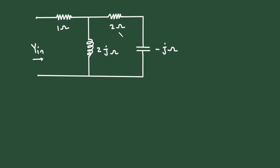Now here we can see this 2 ohm and this minus j are connected in series. So this will be 2 minus j, 2 minus j ohm.